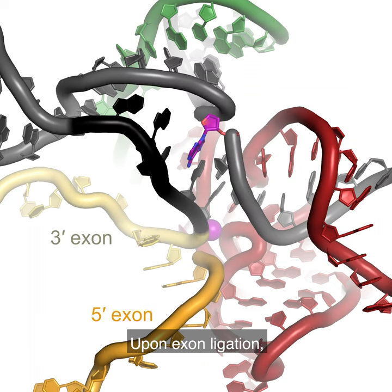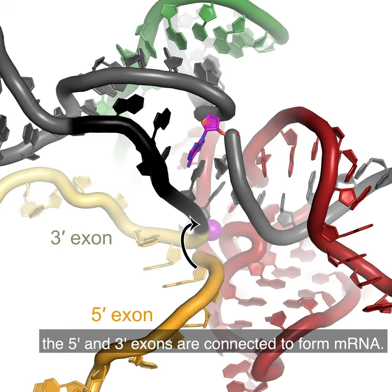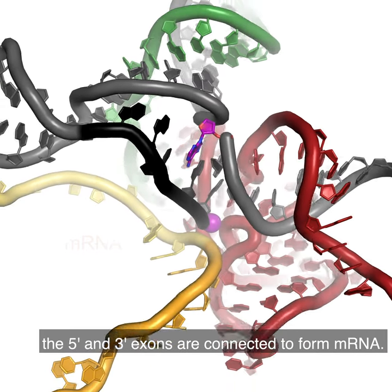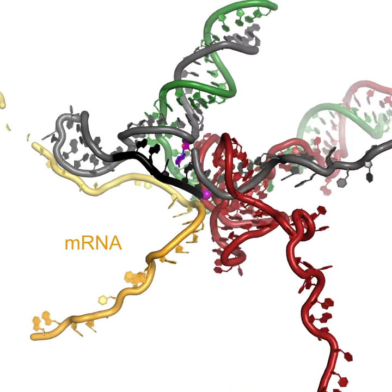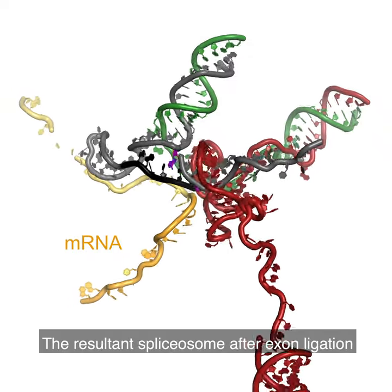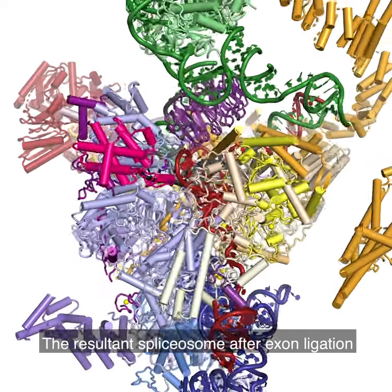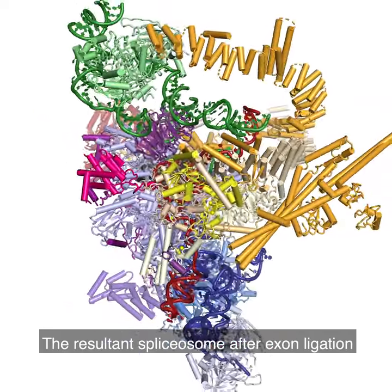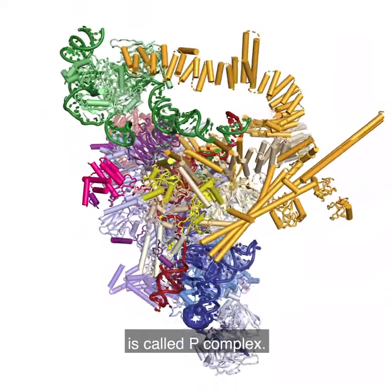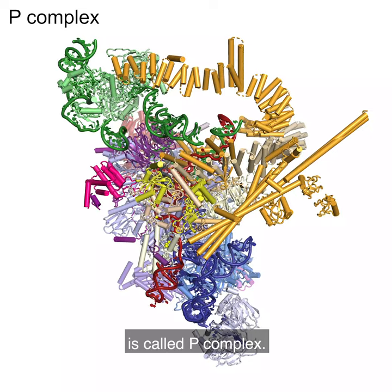Upon exon ligation, the 5' and 3' exons are connected to form mRNA. The resultant spliceosome after exon ligation is called P-complex.